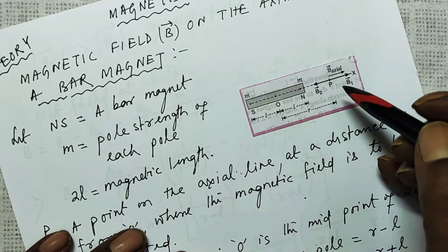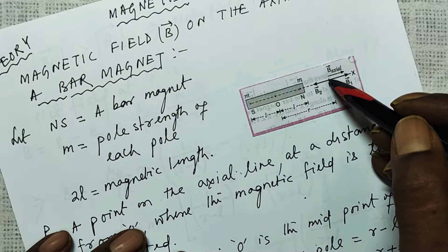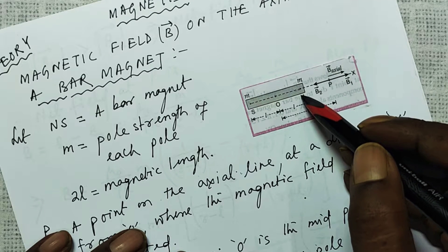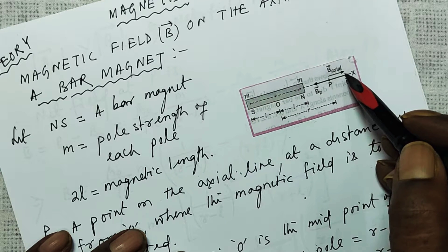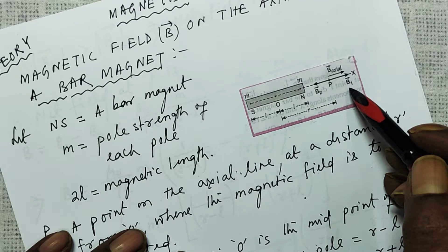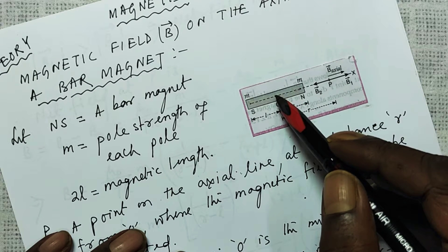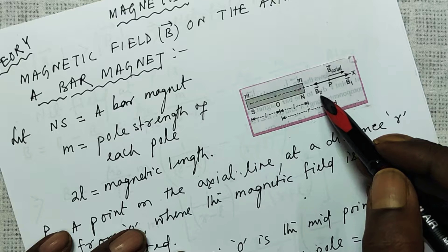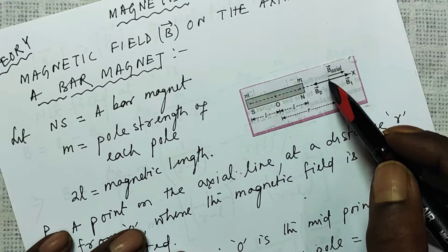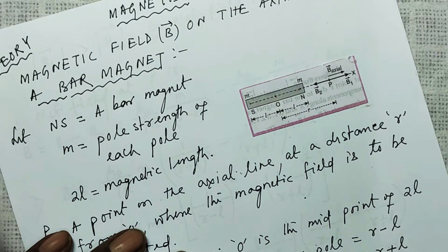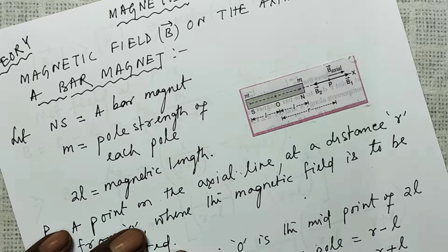There will be two fields. If you put a unit north pole here, that north pole will be repelled by this north pole to this side — that will be called B1, magnetic field B1. And this unit north pole will be attracted by this south pole towards this side — that will be called B2. The distance from O to the point P I have taken as R. A similar derivation we had done in electrostatics when we found out the electric field on the axial line of an electric dipole.